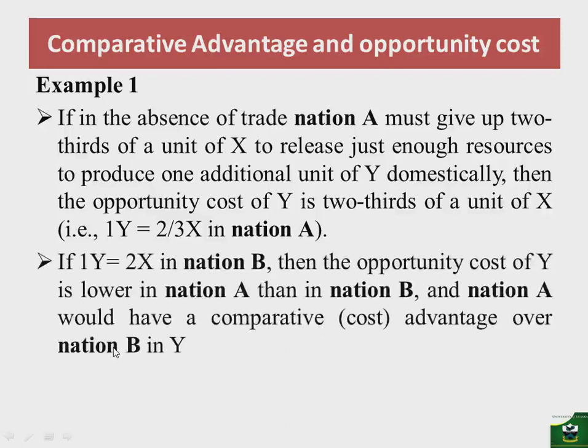In nation A, to produce an additional unit of Y you give up only 2/3 of X. But in nation B, to produce one additional unit of Y you give up 2 units of X — meaning you are giving up more in nation B to produce an additional unit of Y.